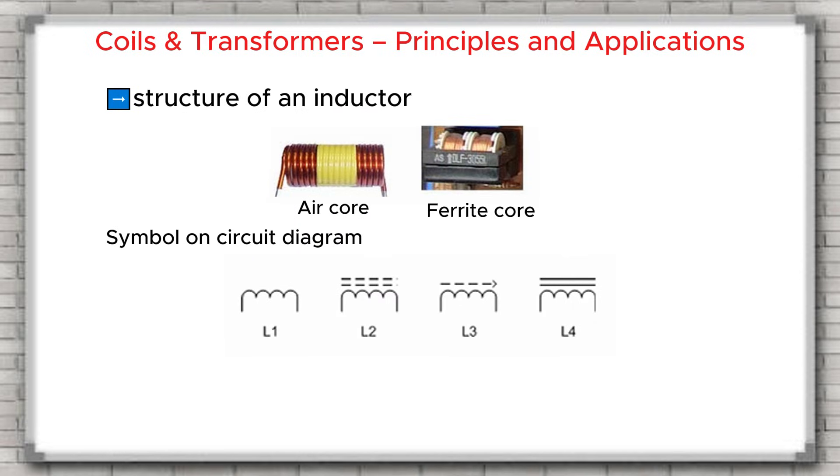First, let's talk about the structure of an inductor. An inductor is made by winding a piece of copper wire into many turns. This copper wire is covered with an insulating layer called enamel coating. The core of the coil can be made from different materials, such as air core, ferrite core, adjustable core, or laminated iron core.